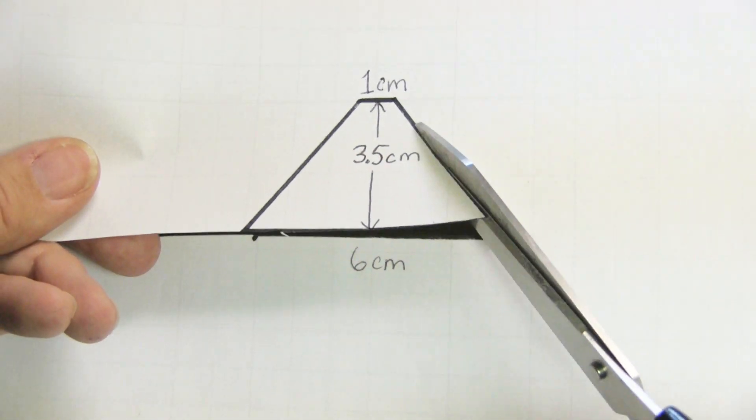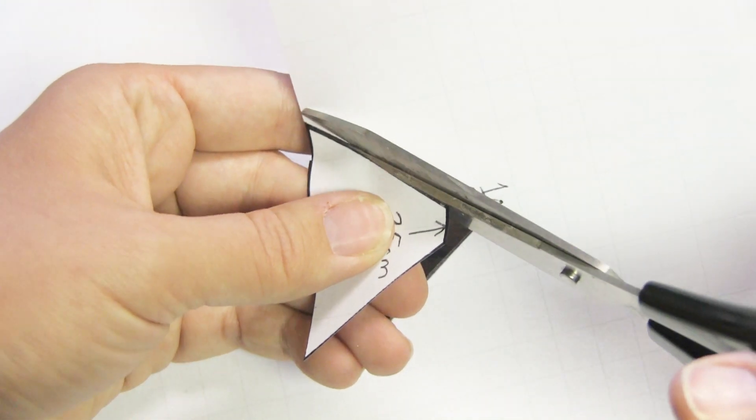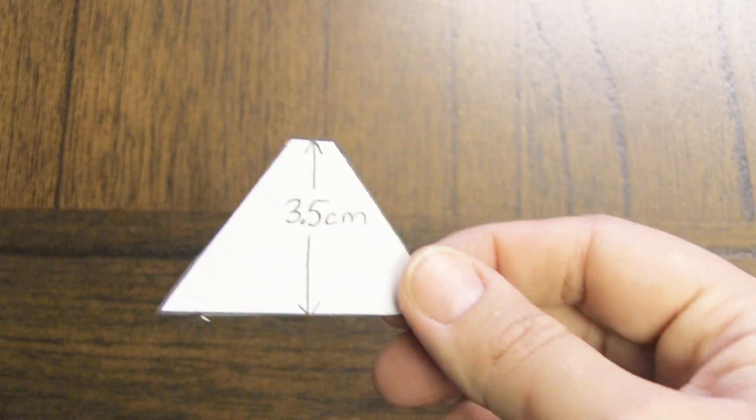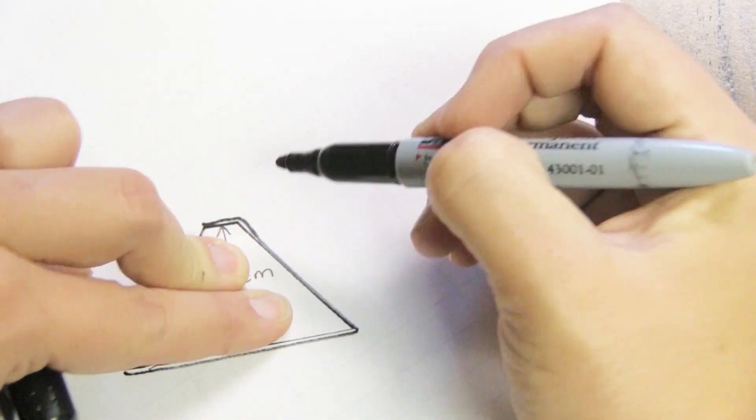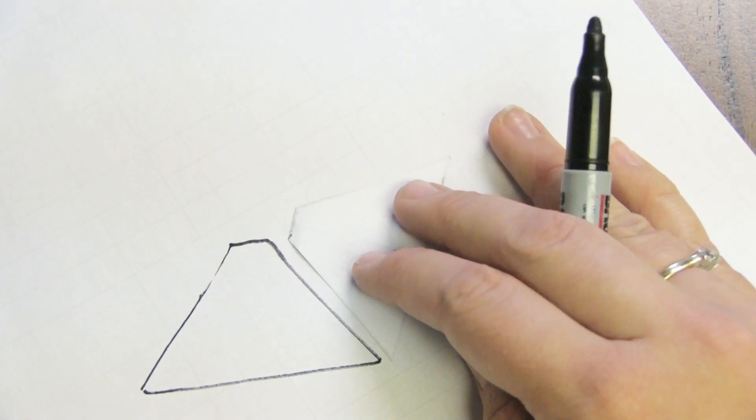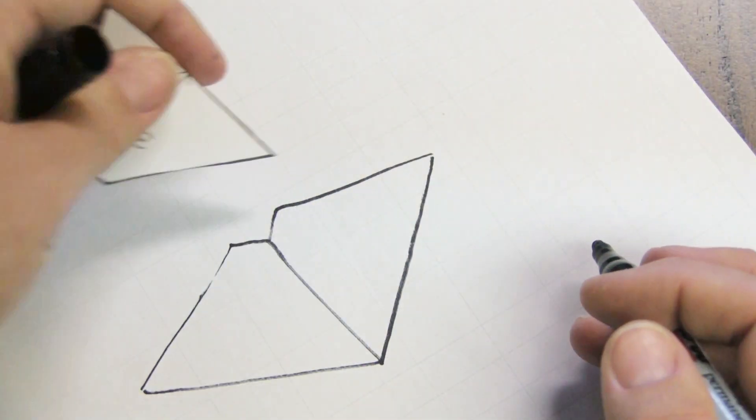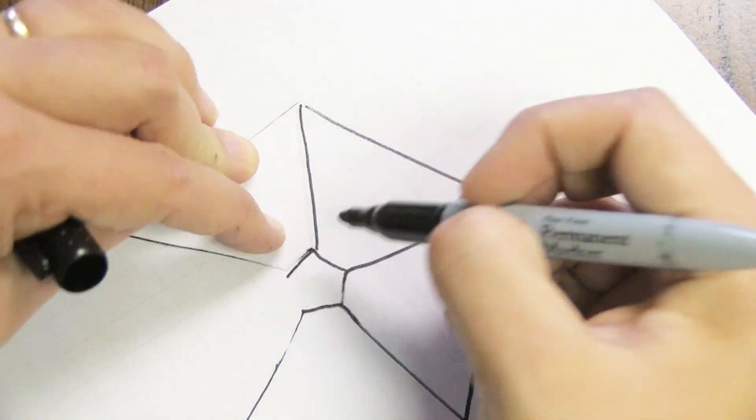Now you could use this template to cut out four separate pieces of plastic and tape them all together. But the easiest way is to use this triangle that you just cut out to make a pentagon shape. So just trace around the triangle, flip it over, line it up with the side and trace again. You're going to do that four times. So your new template looks like this.